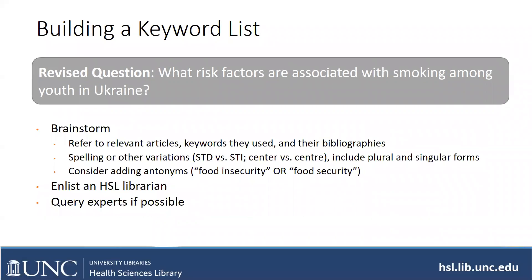To build your keyword list, start brainstorming and do a quick-and-dirty search using the keywords you started with. Then look at the relevant articles you find — what keywords did they use? Go look at their abstracts, their bibliographies and titles. If you see synonyms, add them. You might find that 'youth' might also be 'adolescents,' 'teens,' or 'teenagers.'